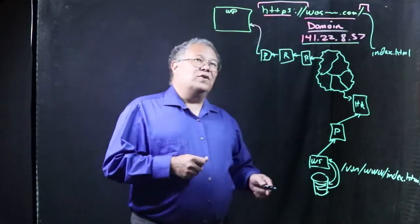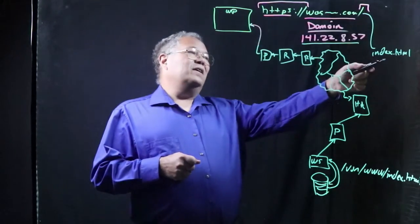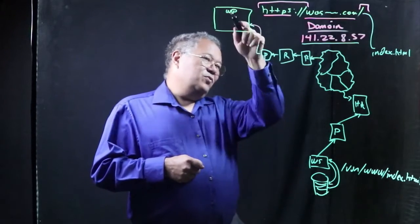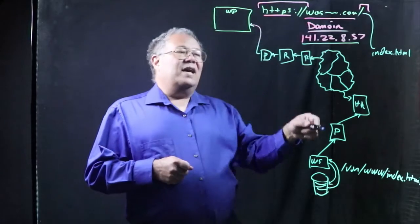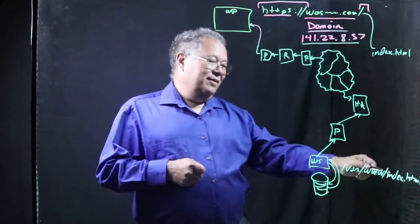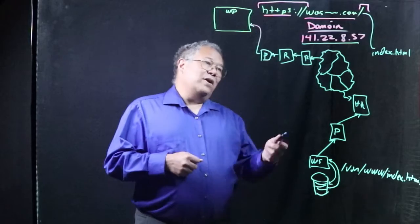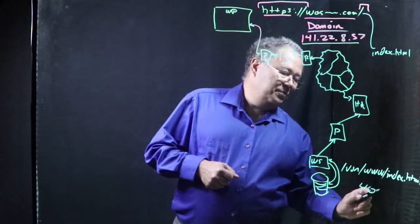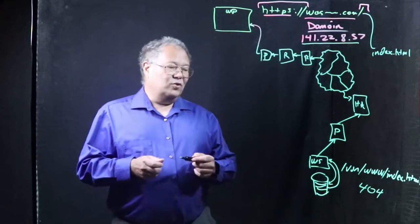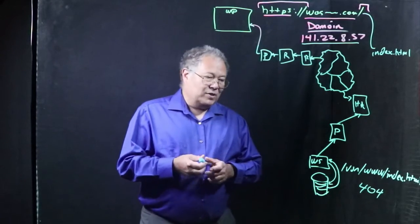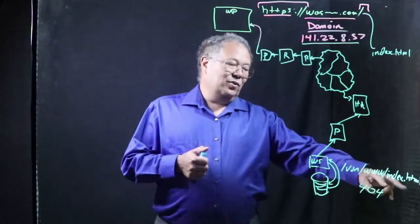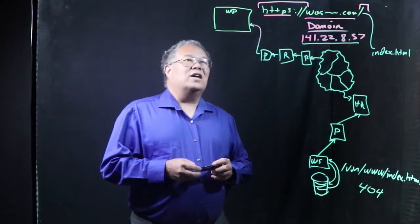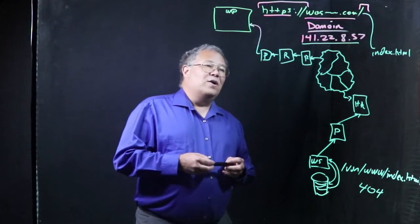Before it can even get this file, it's going to have to complete the HTTPS handshake. It does all of this routing stuff, gets its handshake, gets its encryption set up, and boom. If for some reason they didn't have that file, instead of getting it back, you would get a 404 error. Most of you have seen that one time or another. It says, sorry, whatever you were looking for isn't here. But Washington Post will have an index.html and send it back to you.